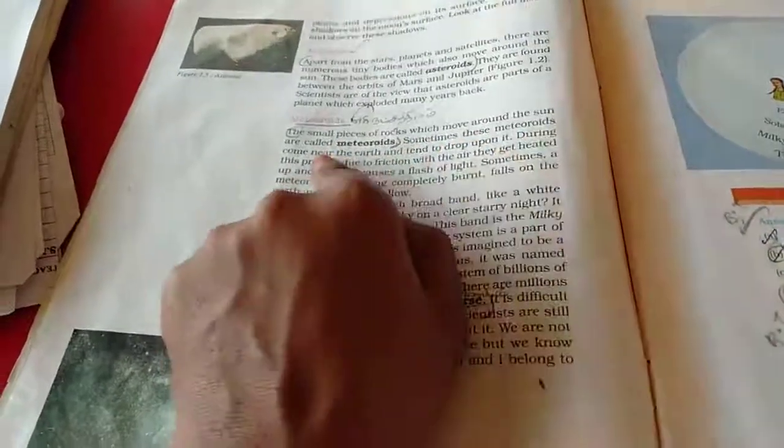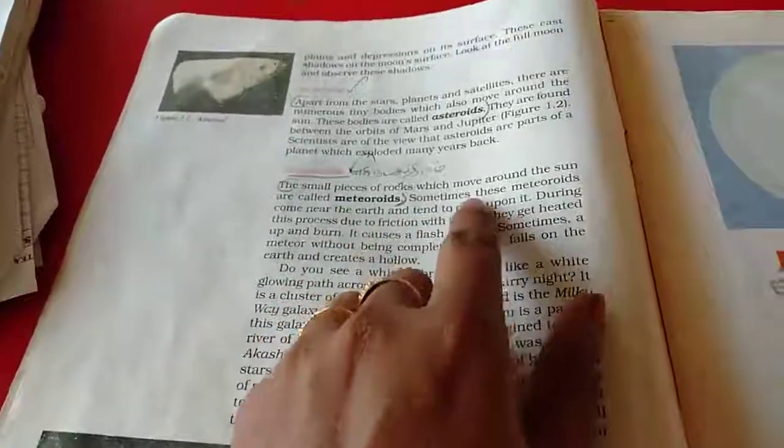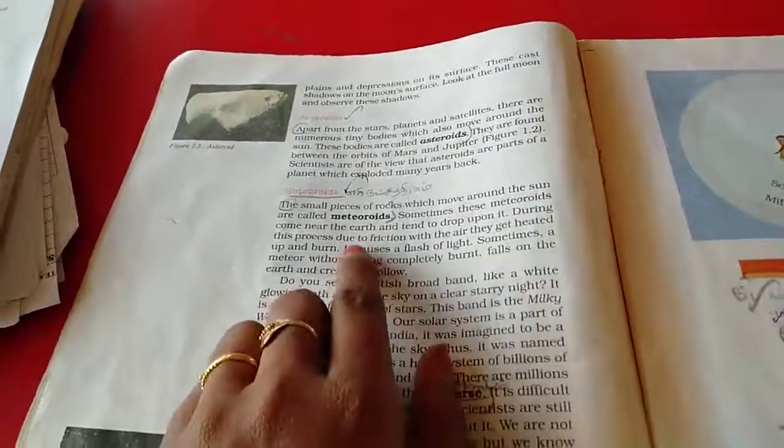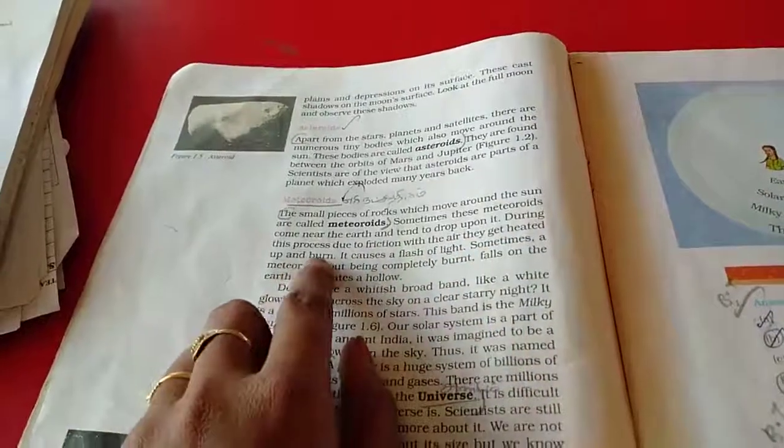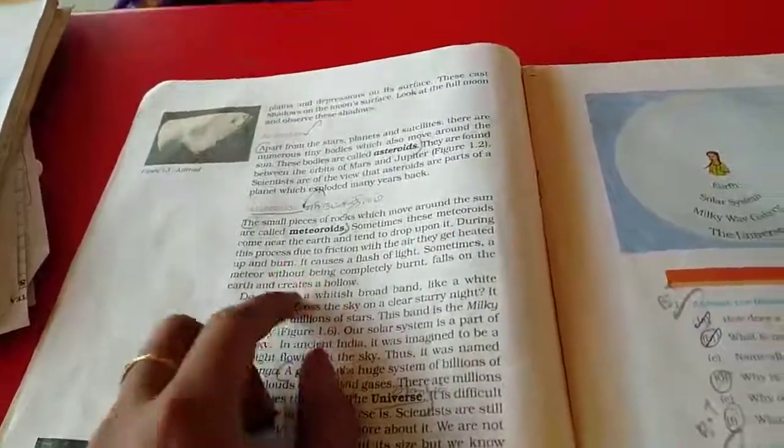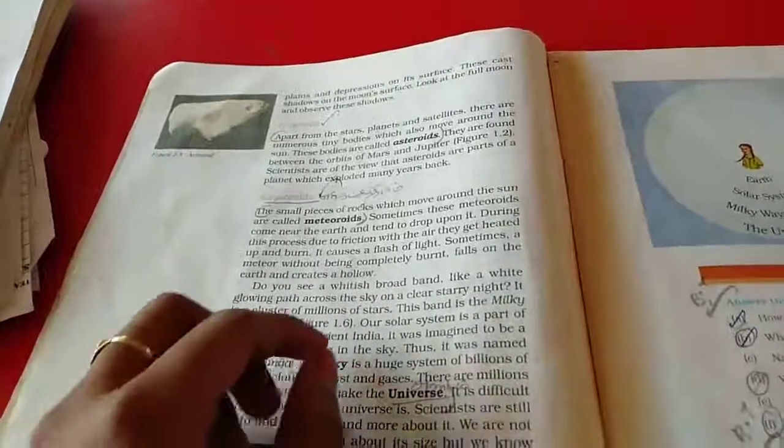Sometimes, these meteoroids come near the earth and tend to drop upon it. During this process, due to friction in the air, they get heated up and burn. Lot of heat, we can get that.